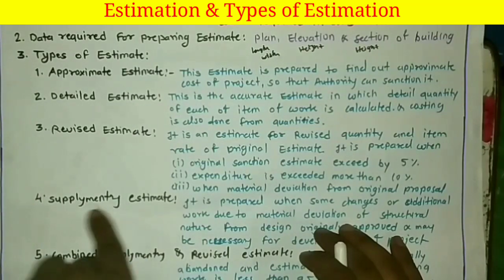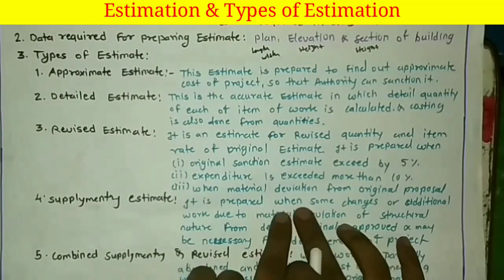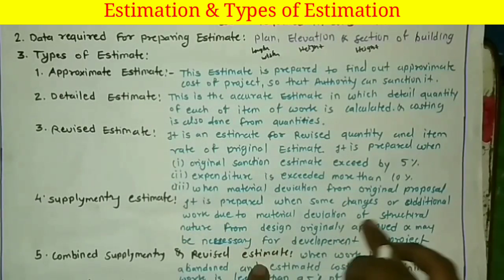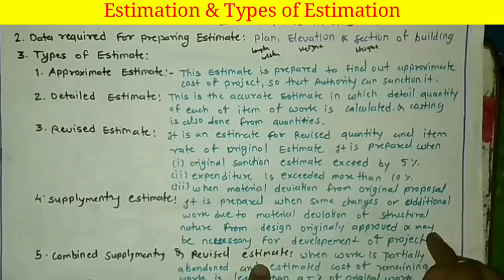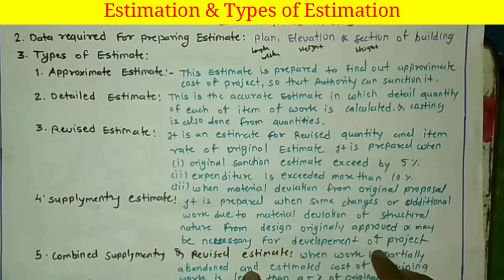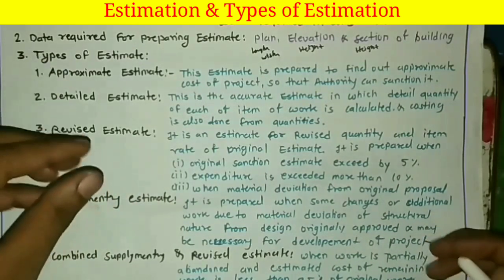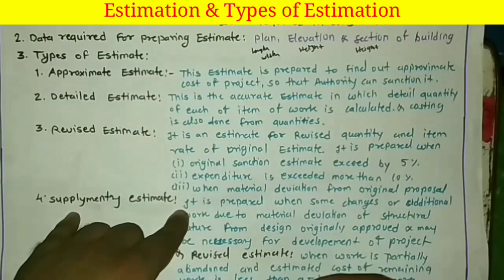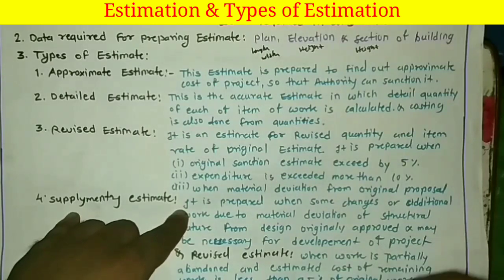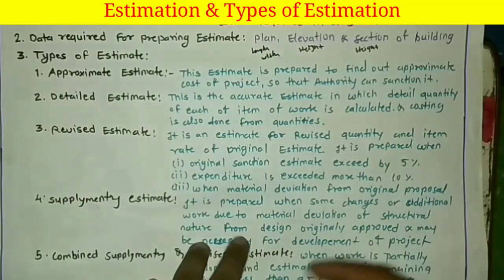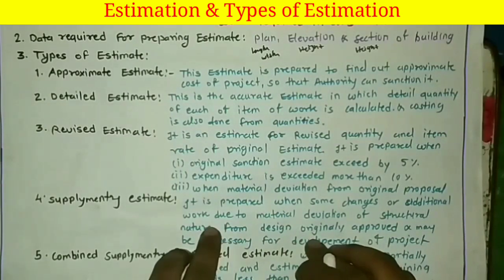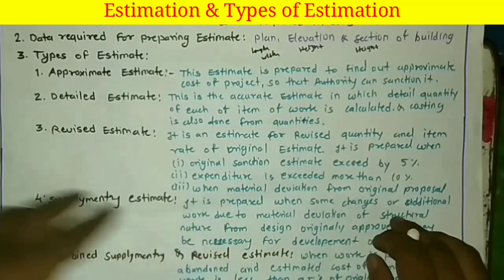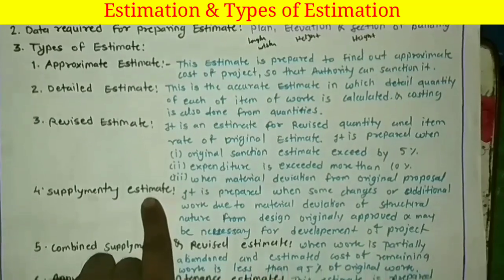The supplementary estimate is prepared when some changes or additional work — due to material deviation of a structural nature from the originally approved design — may be necessary for the development of the project. Means, if any work that is not mentioned in the detailed estimate needs to be constructed after the progress of work has begun, or the contractor has to do that work additionally, the contractor has the right to prepare a supplementary estimate for that supplementary or extra work.